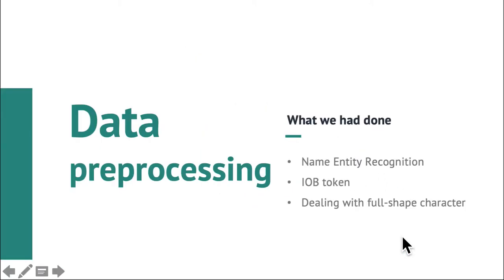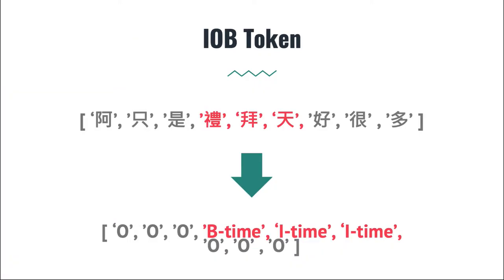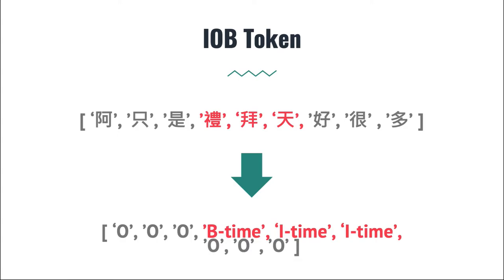The data preprocessing we've done includes IOB token notation, entity recognition, and dealing with full-width characters. We do entity recognition on the original diagnosis dialogues, where all private entities and their types are provided. IOB token notation is widely used: non-private characters are marked as O, the beginning character of private data is marked as B, and other characters are marked as I. We also found full-width characters in the original data which affect performance, so we transform them into half-width characters in advance.